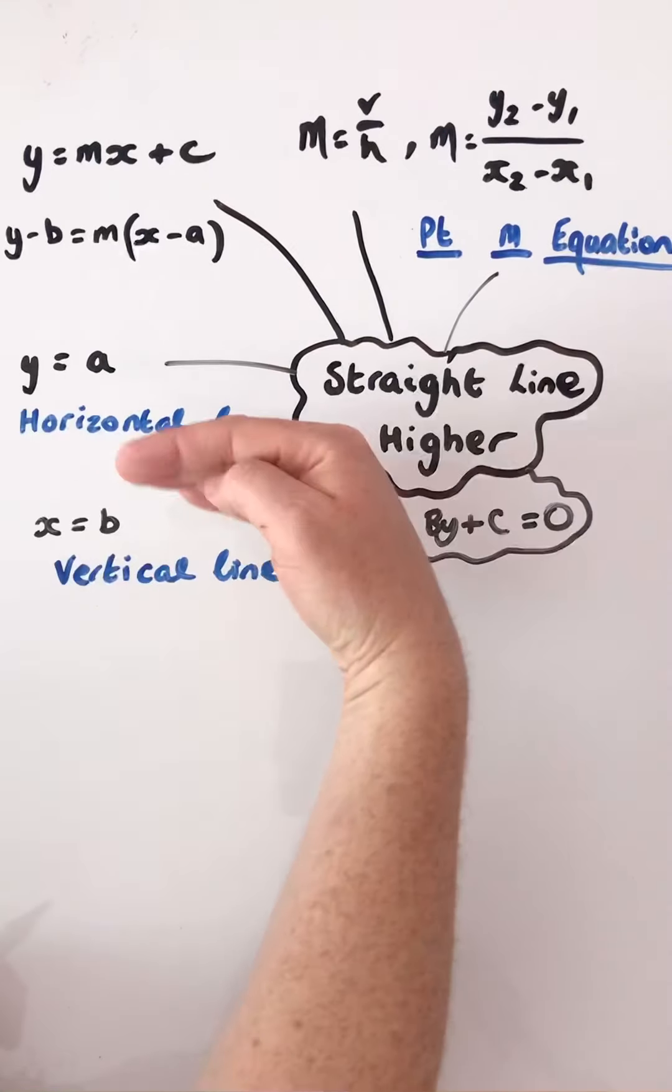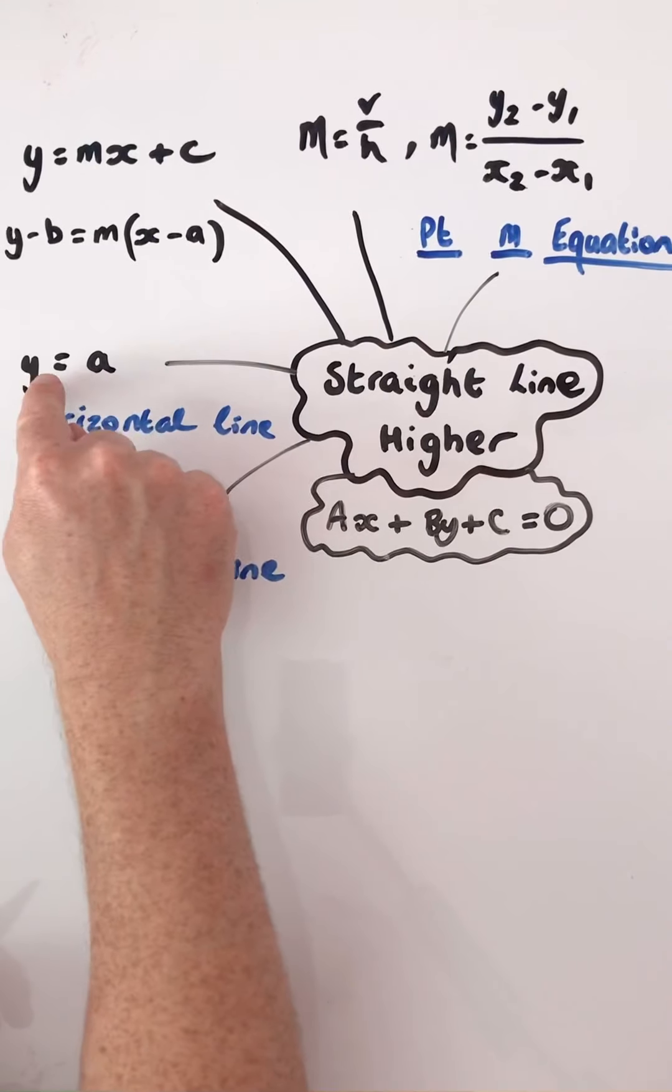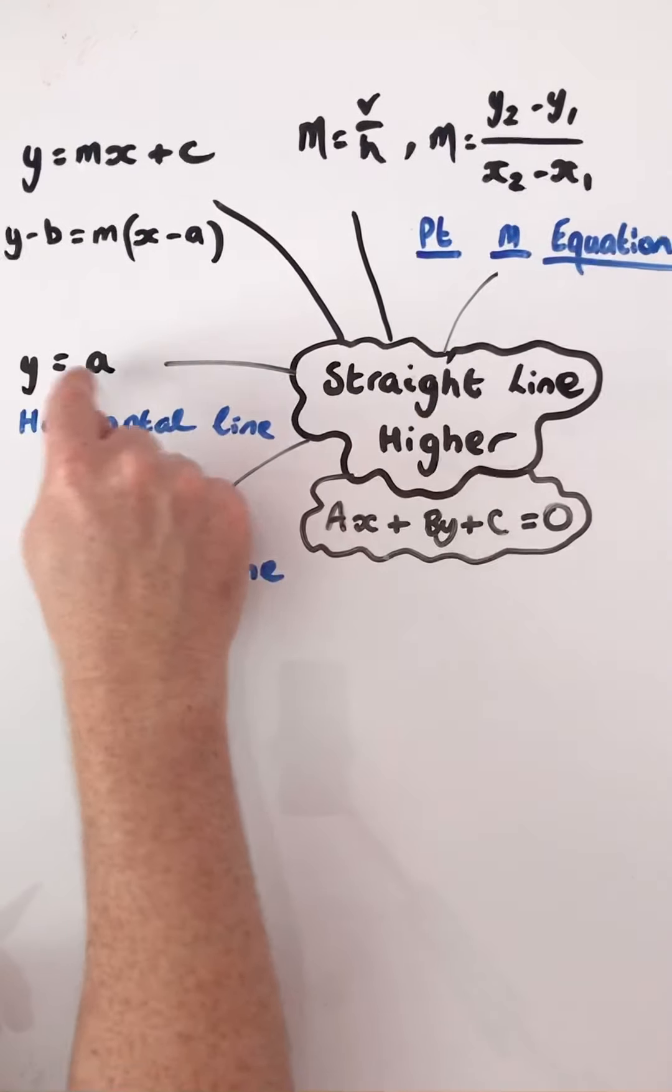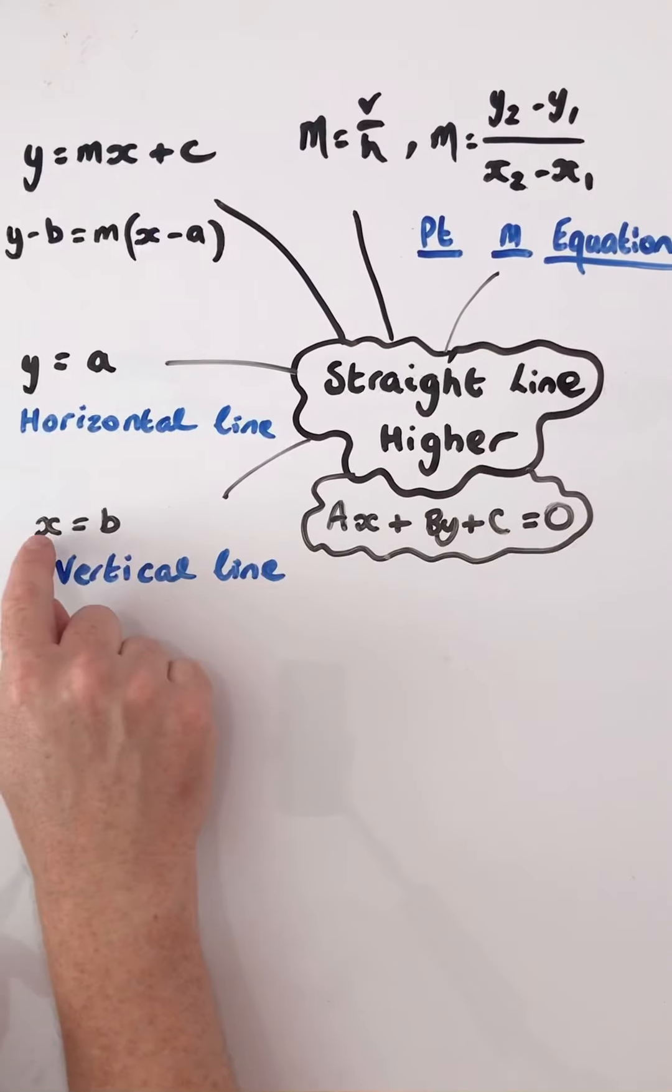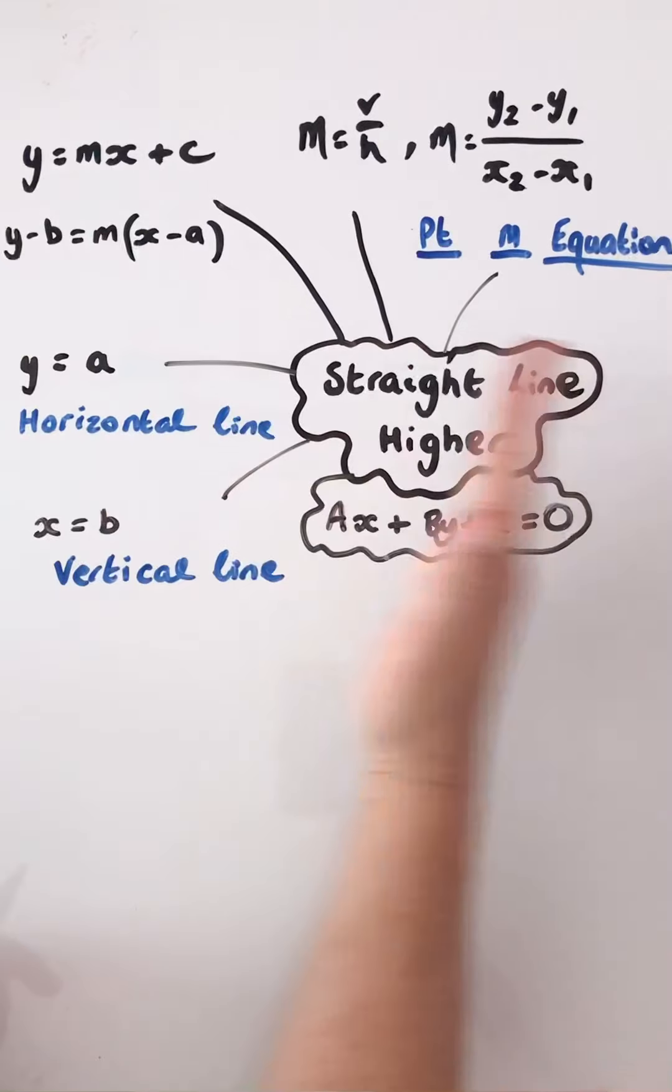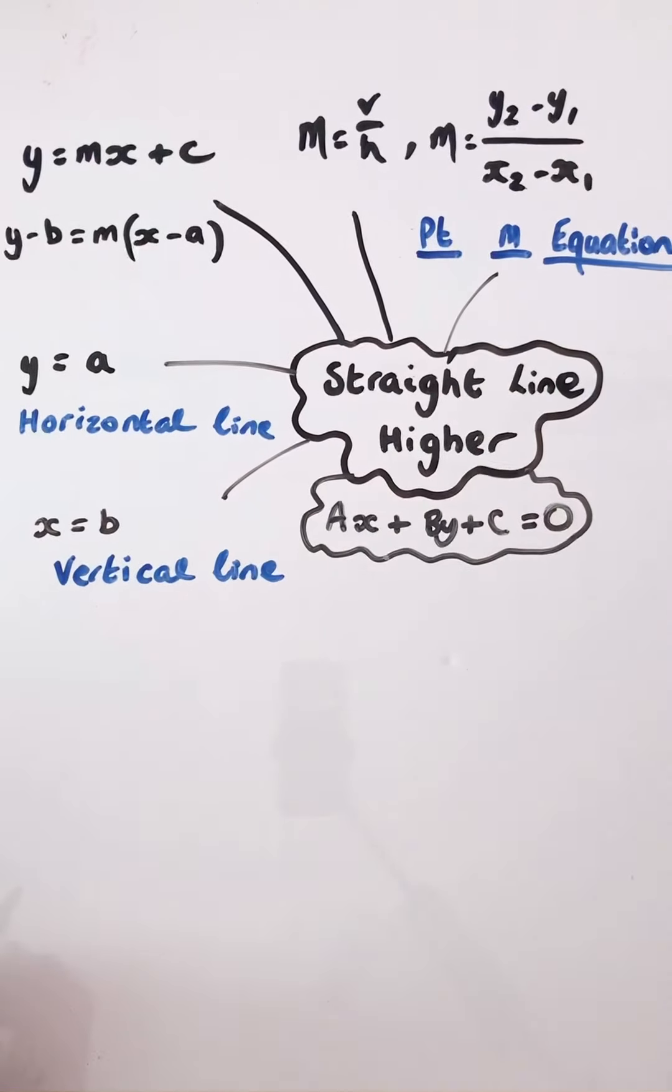We've got horizontal lines, where y takes a value, y equals a, a is a member of the real numbers, and we've got vertical lines, x equals b, where b is any value on your x-axis.